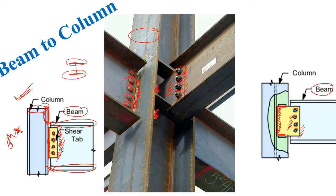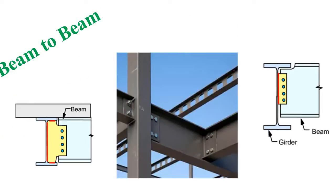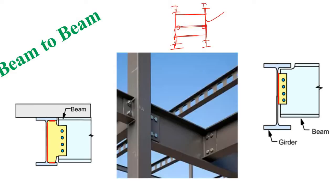Now let's discuss the beam-to-beam connection. Consider a frame structure in plan — you have columns, two primary beams, and three secondary beams. What we normally do is connect the secondary beams to the primary beams through a pin connection, also called a shear connection.